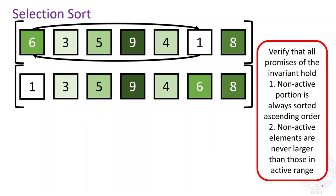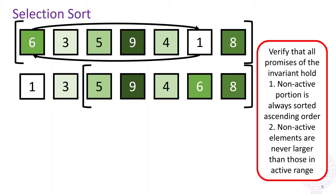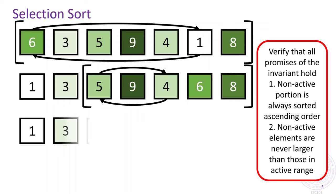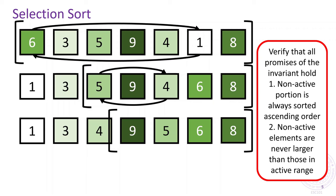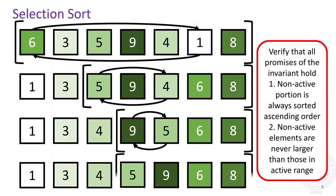After this, we shrink the active range since the smallest element in the array is already at its correct location. We again find the smallest element in this new active range. It is element 3, but we need not move it since it is already in the leftmost position of the active range. Thus, all we need to do is shrink the active range further. The smallest element in the active range is now element 4, which we bring to the leftmost position and shrink the active range even more. Notice how the algorithm ensures that non-active elements are always sorted in increasing order and they are no bigger than any element in the active range, as promised in the invariants. Repeating these for a few more steps will completely sort the array.